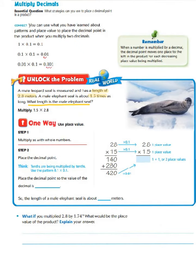Let's take a look at the first strategy we can use to place a decimal point in a product — using place value. Step 1 is to multiply as with whole numbers. We take 2 and 8 tenths and make it the whole number 28, and 1 and 5 tenths becomes 15. So 8 times 5 equals 40 — carry the 4. Then 2 times 5 is 10, 11, 12, 13, 14. So 28 times 5 is 140.